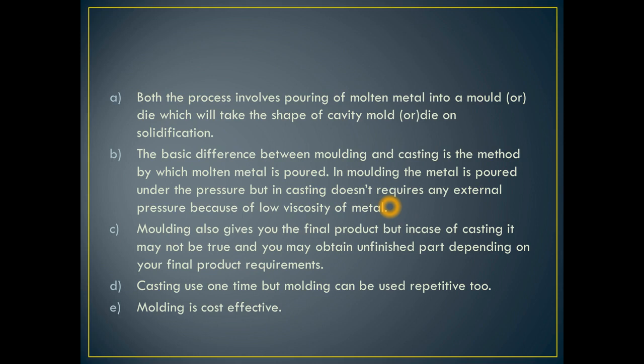The basic difference between molding and casting is the method by which molten metal is poured. In molding, metal is poured under pressure, but in casting it does not require any external pressure because of the low viscosity of metal.